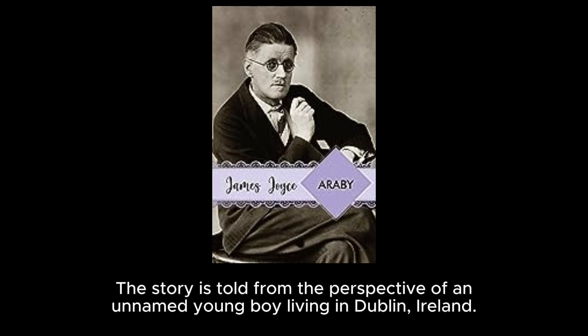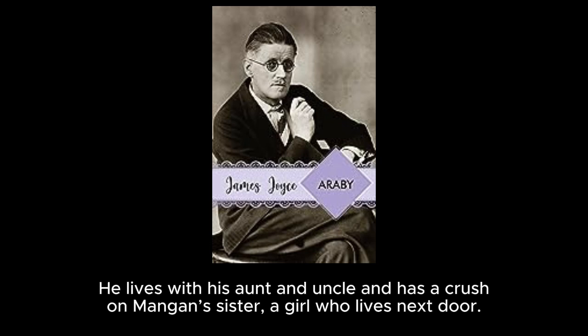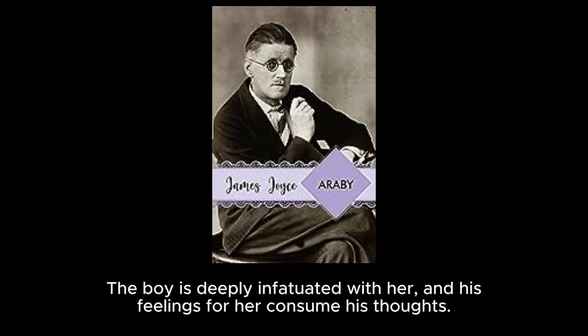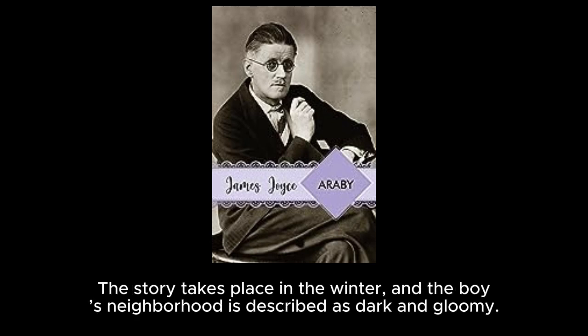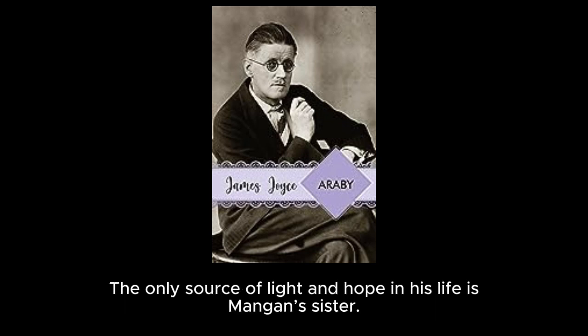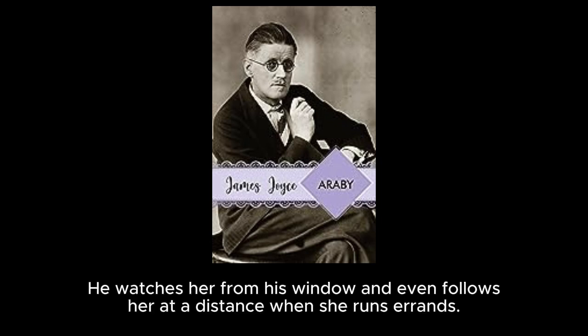The story is told from the perspective of an unnamed young boy living in Dublin, Ireland. He lives with his aunt and uncle and has a crush on Mangan's sister, a girl who lives next door. The boy is deeply infatuated with her and his feelings consume his thoughts. The story takes place in the winter and the boy's neighborhood is described as dark and gloomy. The only source of light and hope in his life is Mangan's sister. He watches her from his window and even follows her at a distance when she runs errands.